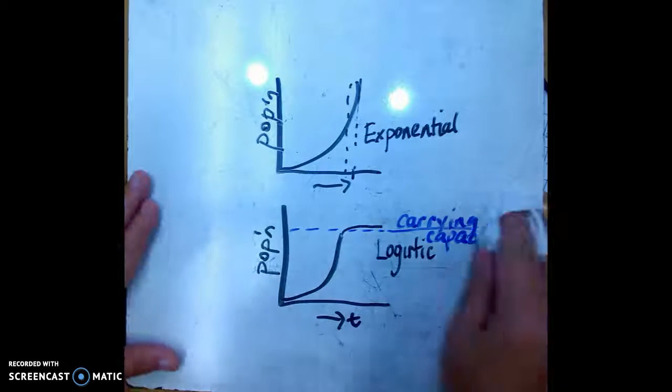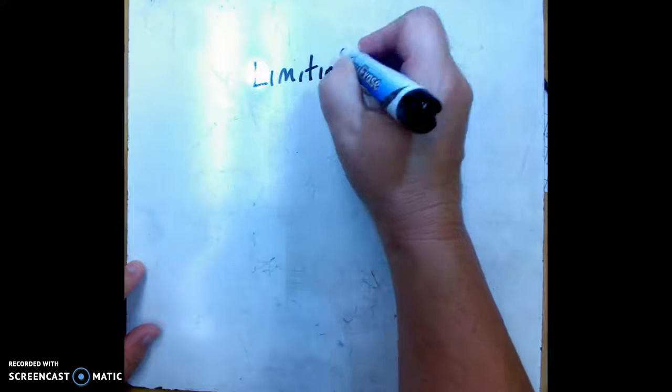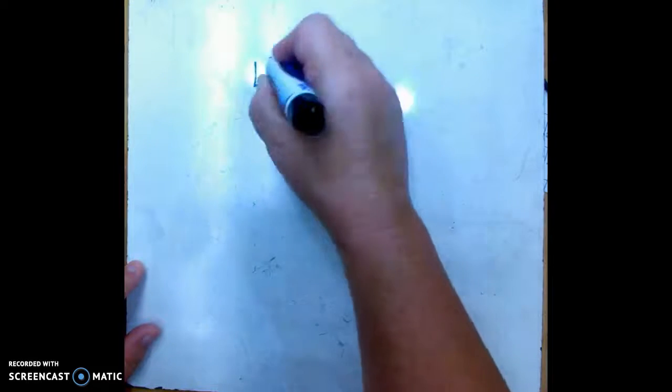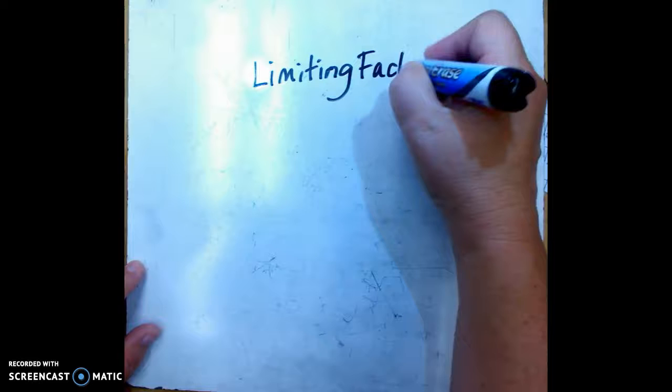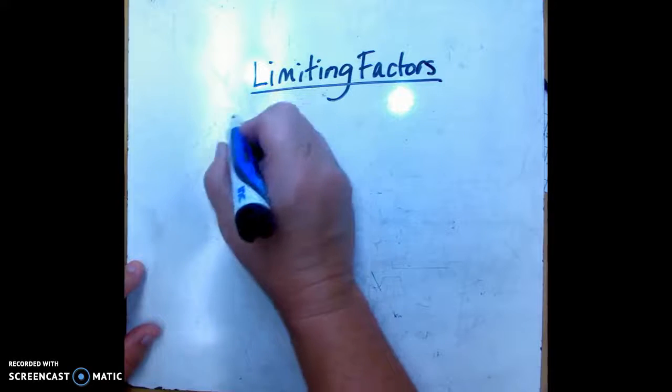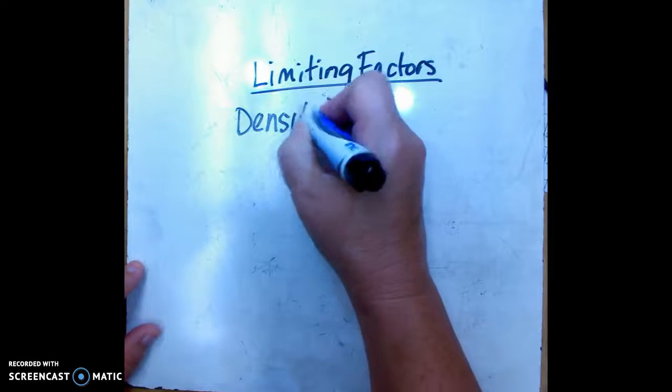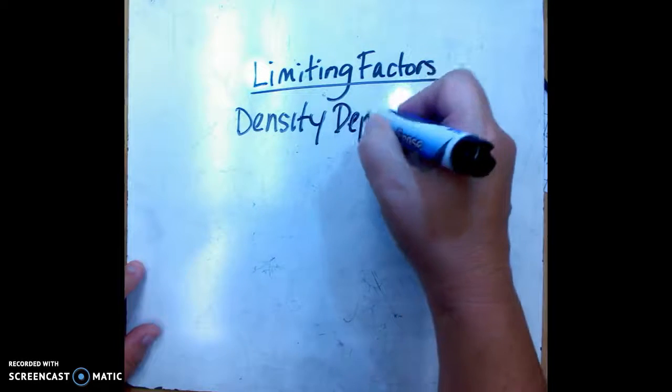So those are some of the things that you have to know about populations. The next thing that you have to know is the kinds of things that bring a community to carrying capacity or that affect populations. These are called limiting factors - they limit the population, and there's two types. There's density dependent limiting factors.